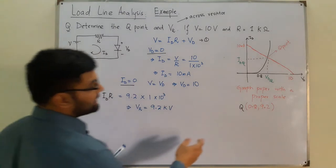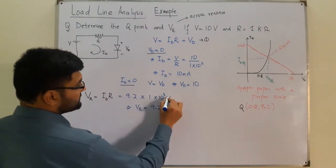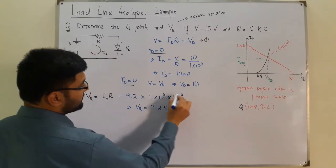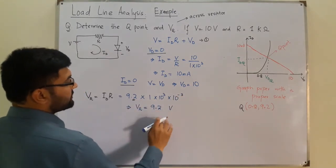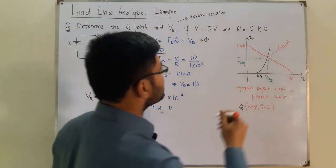Why is this kilo volt wrong? Because this 9.2 is in milliamperes, so we have 10 to the power negative 3 with this 9.2 as well. So you have 9.2 volts - this is the answer. This ID is in milliamperes and this VD is in volts.